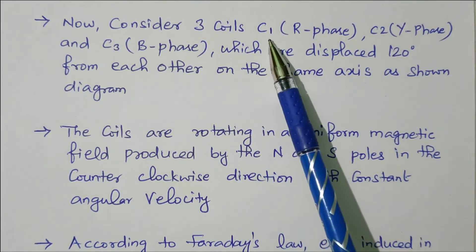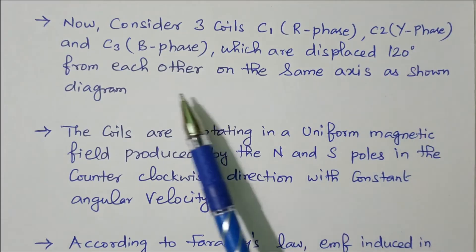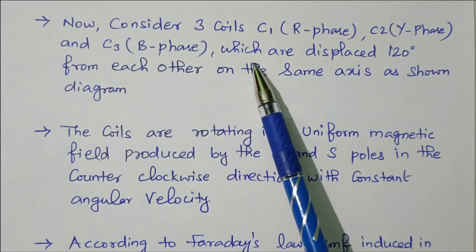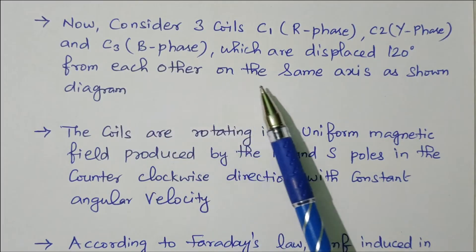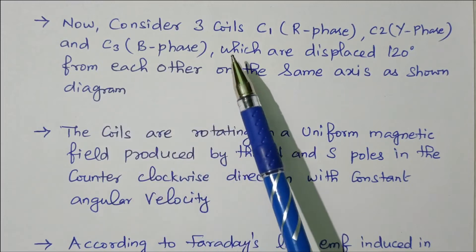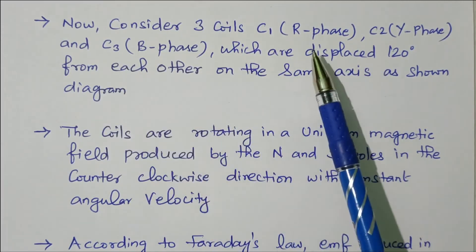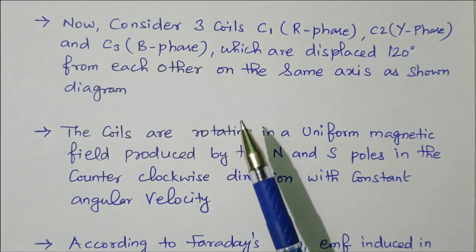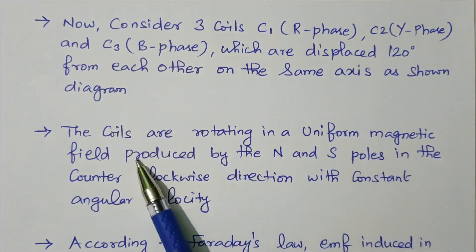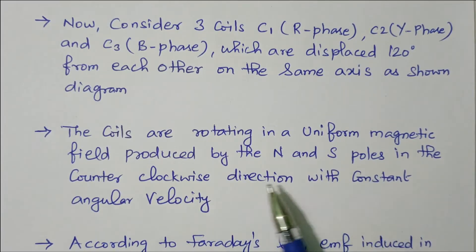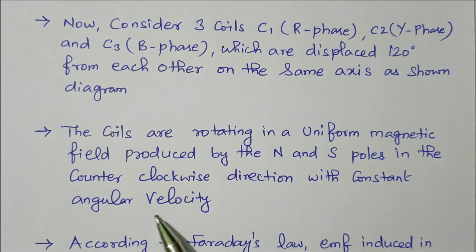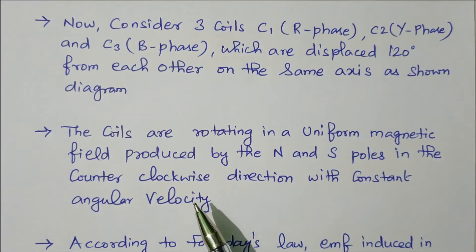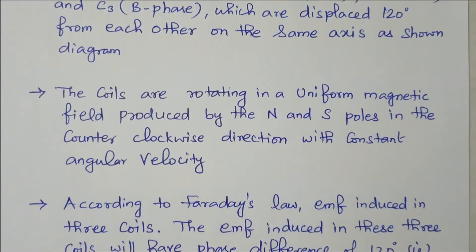Consider three coils: C1 refers to R phase, C2 refers to Y phase, and C3 refers to B phase, which are displaced 120 degrees from each other on the same axis as shown in the diagram. These coils are rotating in a uniform magnetic field produced by N-pole and S-pole in the counterclockwise direction with constant angular velocity.